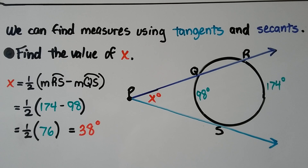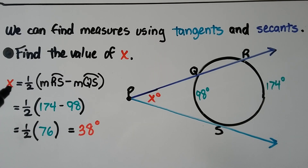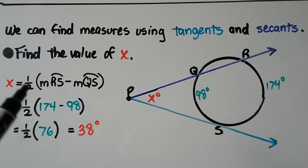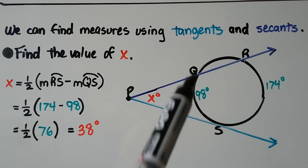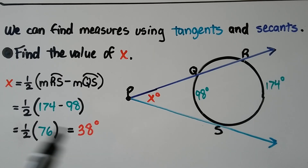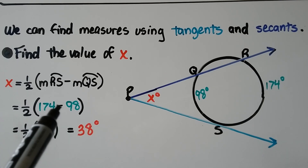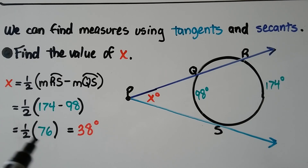We can find measures using tangents and secants. To find the value of X: X equals half times the measure of arc RS minus the measure of arc QS. The arcs are 174 degrees and 98 degrees. We subtract because they intersect on the exterior: 174 minus 98 is 76, and half of 76 is 38 degrees. So X equals 38.